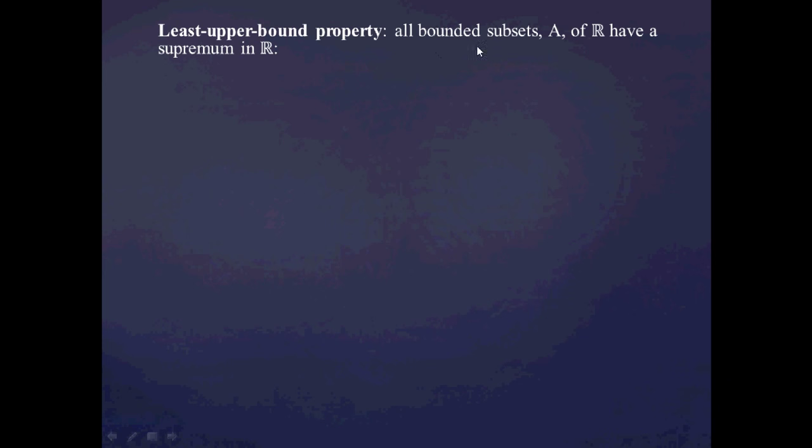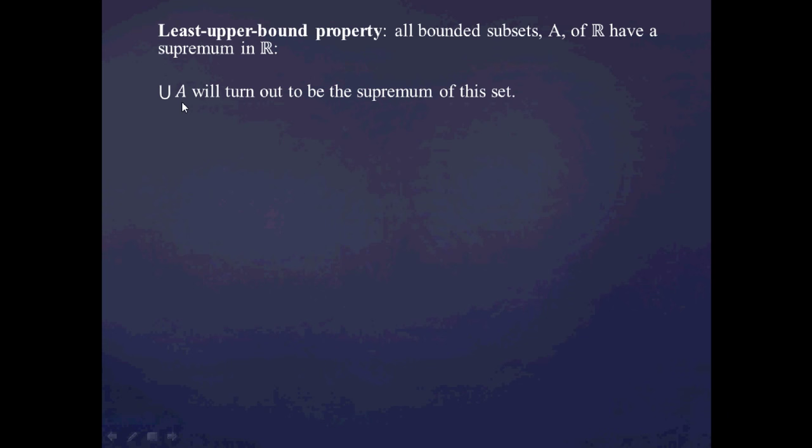The statement is: all bounded subsets of R — any subset that has an upper bound — has a least upper bound which is also a real number. It turns out that if you have a collection of real numbers, a collection of Dedekind cuts gathered into a set A, the supremum of A is going to be the union of A. I encourage you to think about why that is before we go through the proof — why is it that the union of all those Dedekind cuts is the supremum of the set?